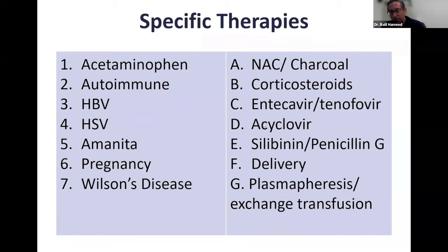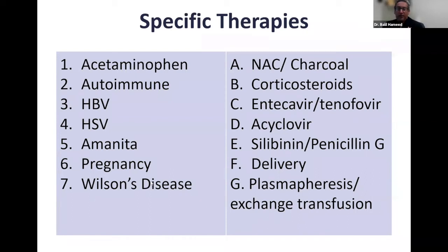In mushroom toxicity, we use penicillin G and a compound called silibinin. Importantly, if a pregnant woman has acute liver failure, the cure is delivery — most of these patients will get better once the baby is delivered. Wilson's disease is rare but if it presents as acute liver failure, these patients will need liver transplantation. It all depends upon the specific therapies based on how sick these patients are when they arrive at your hospital.